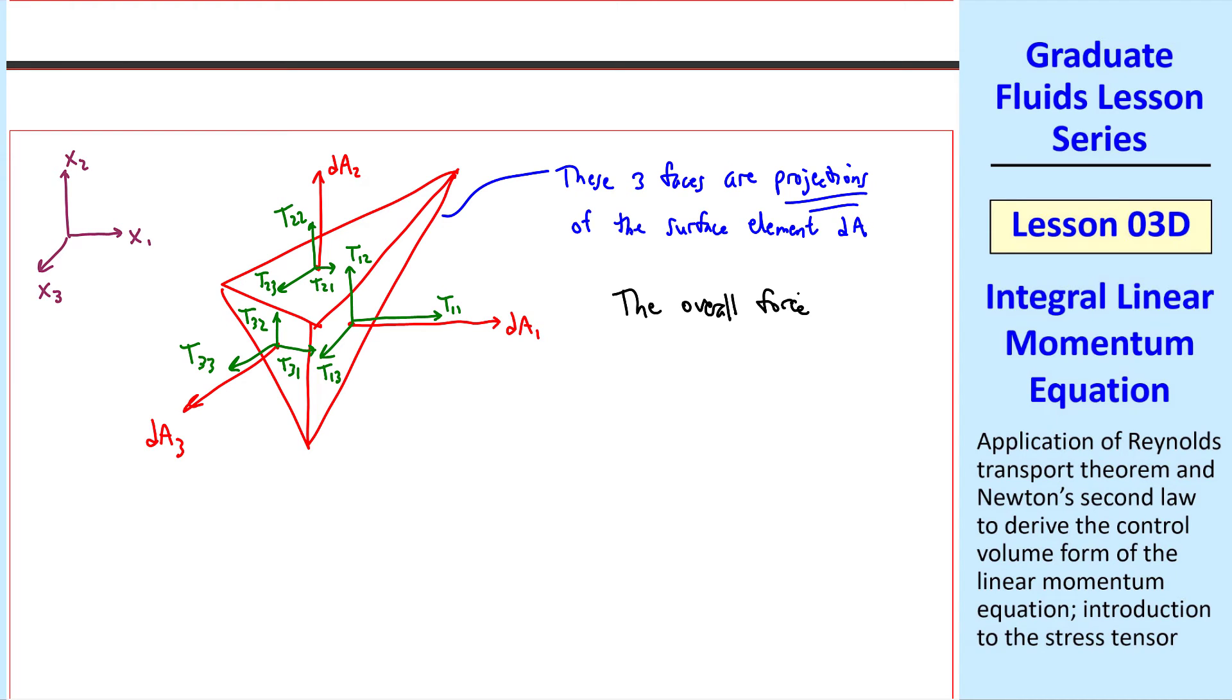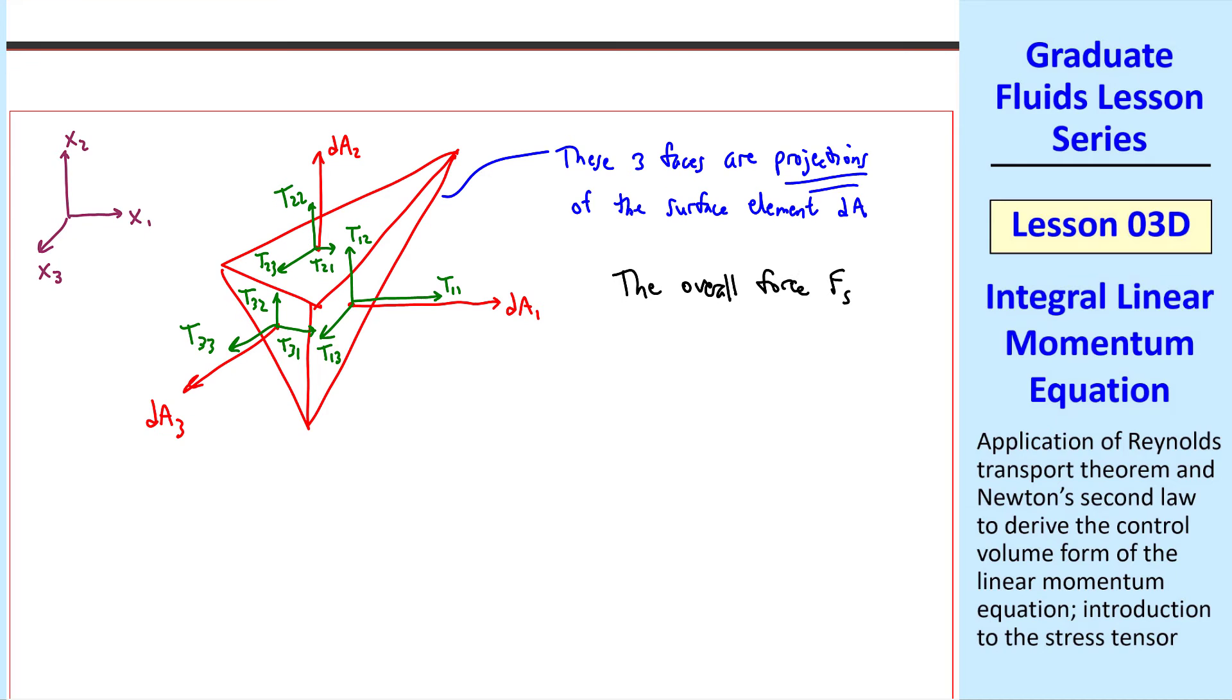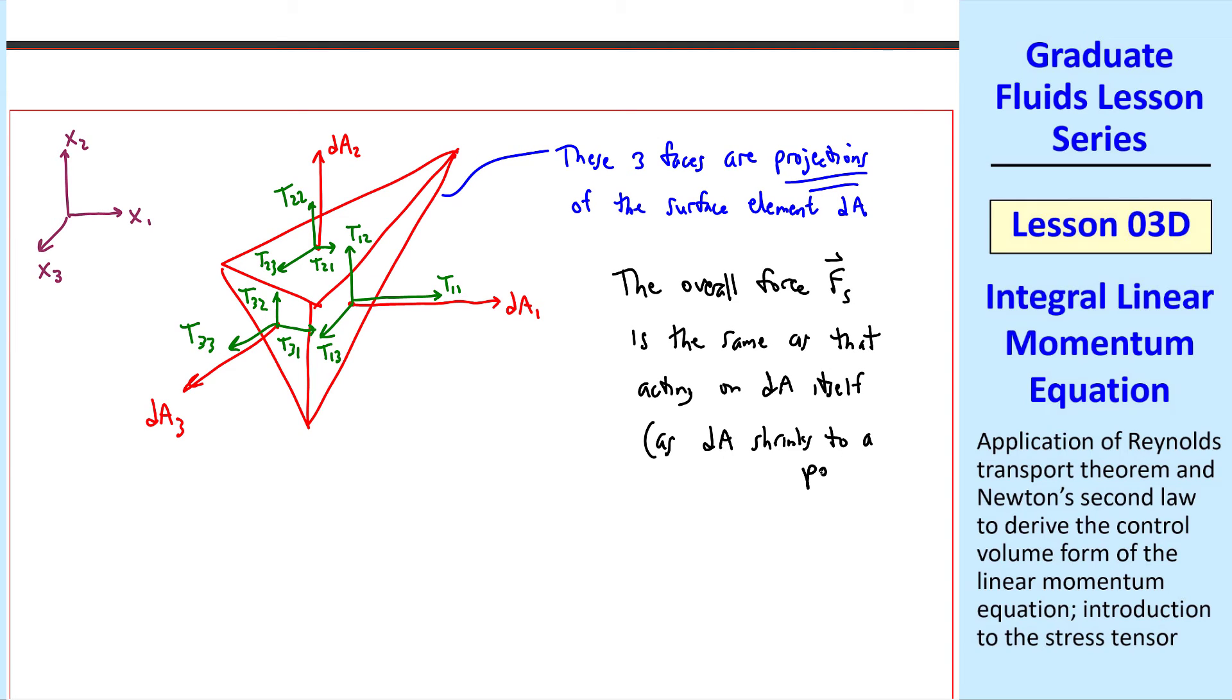These three faces are projections of the surface element dA onto our Cartesian coordinate system. The overall force, both magnitude and direction, which we called Fs, is the same as that acting on dA itself. This is true, of course, as dA shrinks to a point. So all these stresses acting on these three surfaces must add up to the overall force acting on the surface that's hidden behind these.